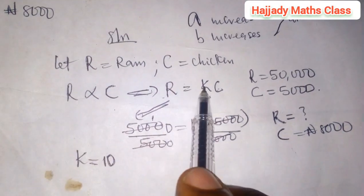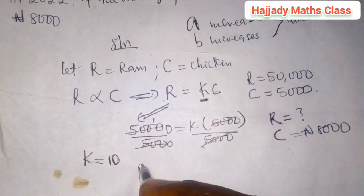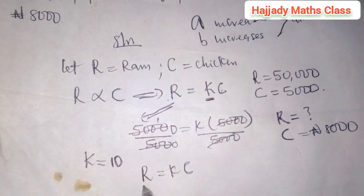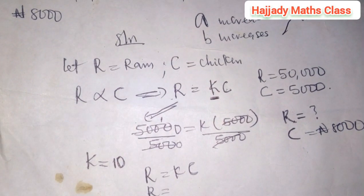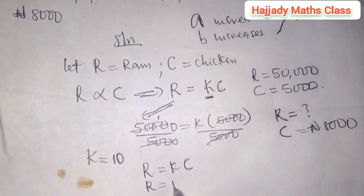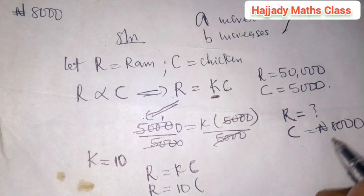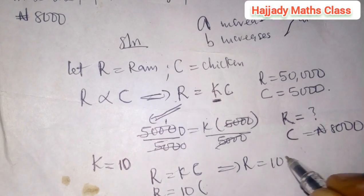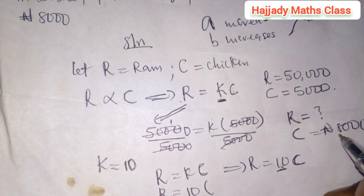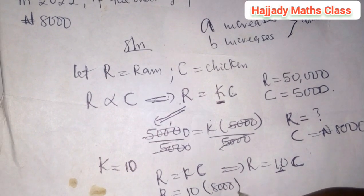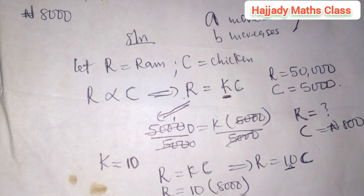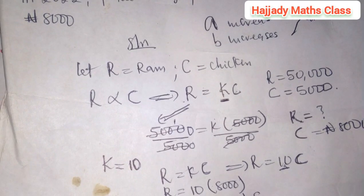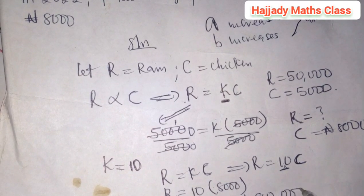Using this constant and coming back to the relationship R equals KC, we are calculating the value of R now. The value of K is 10, and the relationship can be written as R equals 10 multiplied by C. Our C is 8,000. Using this to multiply out, finally the value of our RAM for this year would be 80,000 lira.